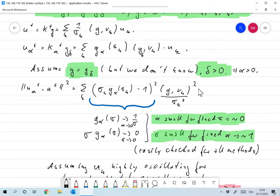Let's for a moment assume that g is g delta. So we have measured correctly but we don't know. The error level delta that we get is still larger than zero. So we have correct data but we think that it might be incorrect. We have an error level delta that's given and so we choose a regularization parameter alpha larger than zero.